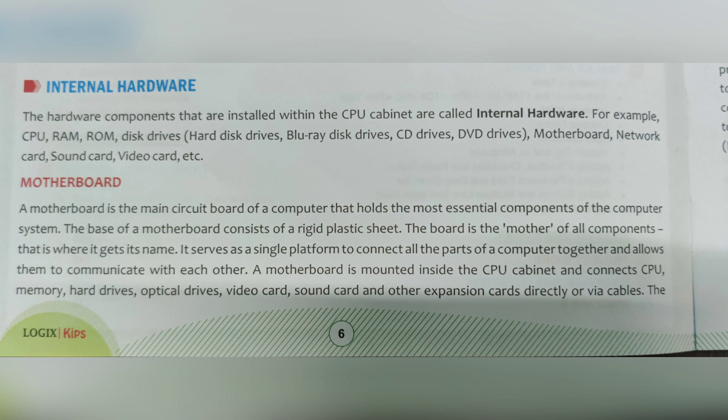Internal hardware refers to the hardware components that are installed within the CPU cabinet. Examples include CPU, RAM, ROM, disk drives, hard disk drives, Blu-ray disk drives, CD disk drives, DVD drives, motherboard, network card, sound card, and video card.